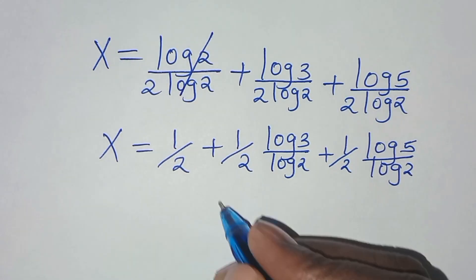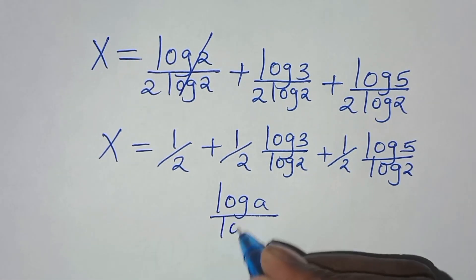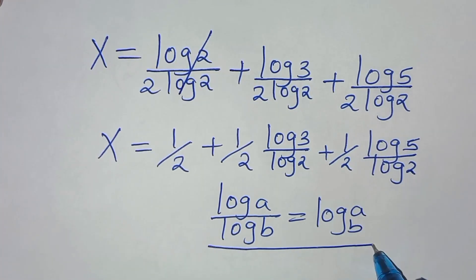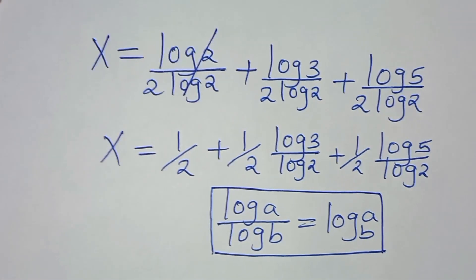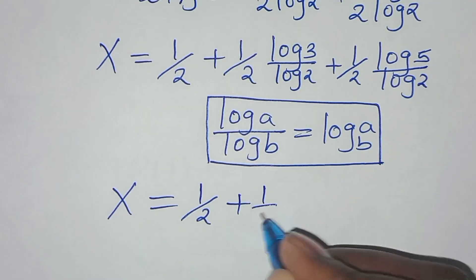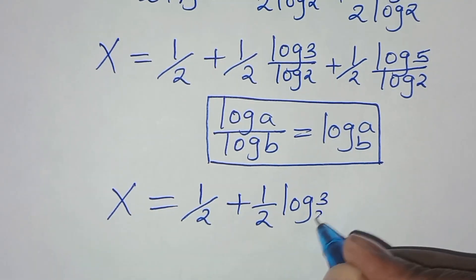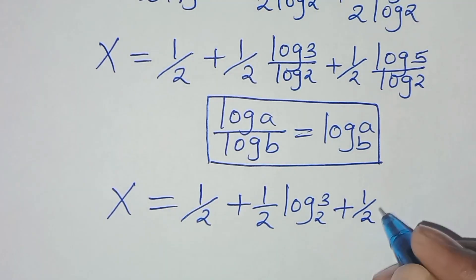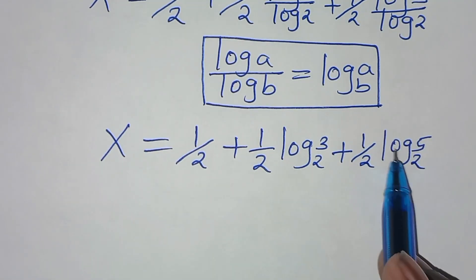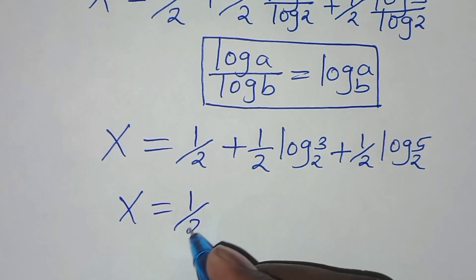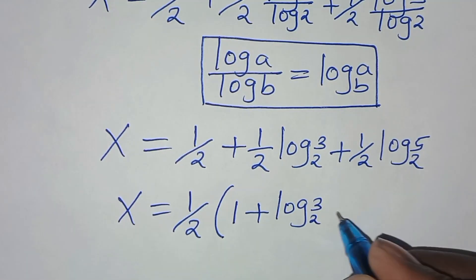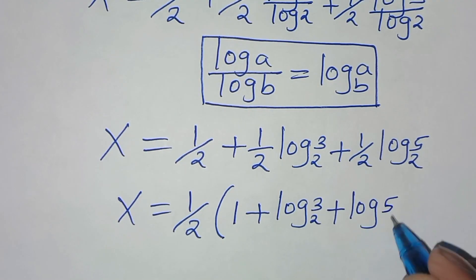Now log 3 divided by log 2 is in the form of log A divided by log B, which we can express as log base 2 of A. Applying this property, x equals one-half, plus one-half·log₂3, plus one-half·log₂5. Since one-half is common, we factor it out, giving x equals one-half times (1 plus log₂3 plus log₂5).